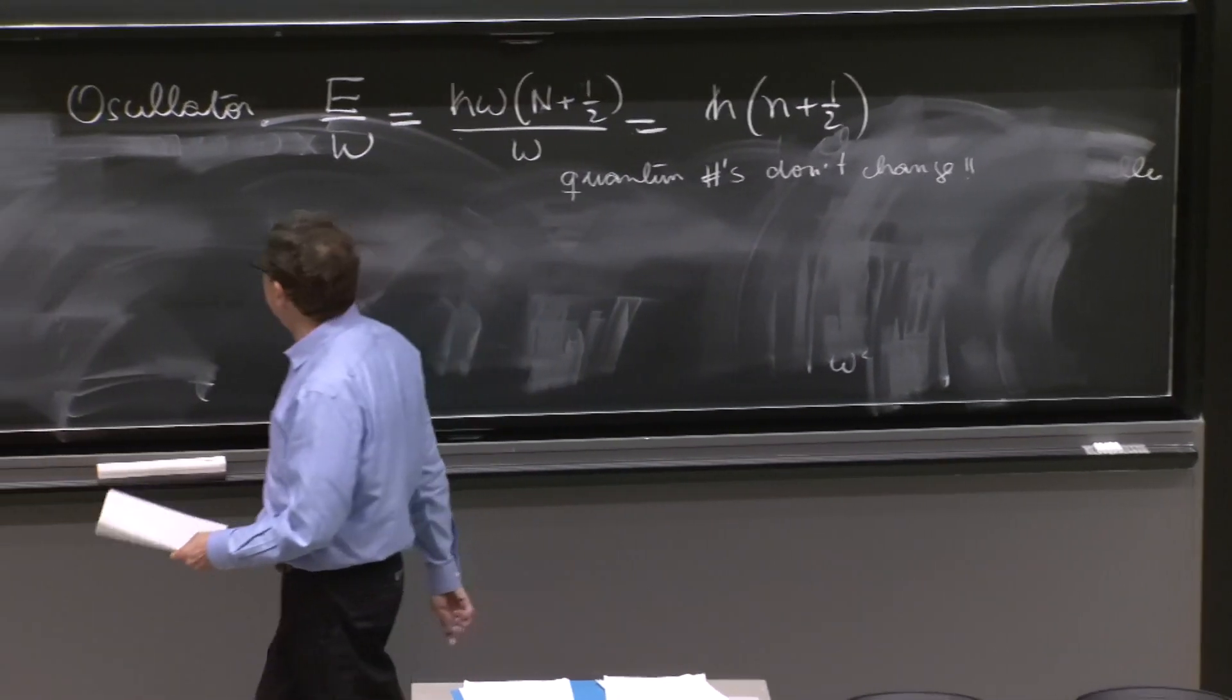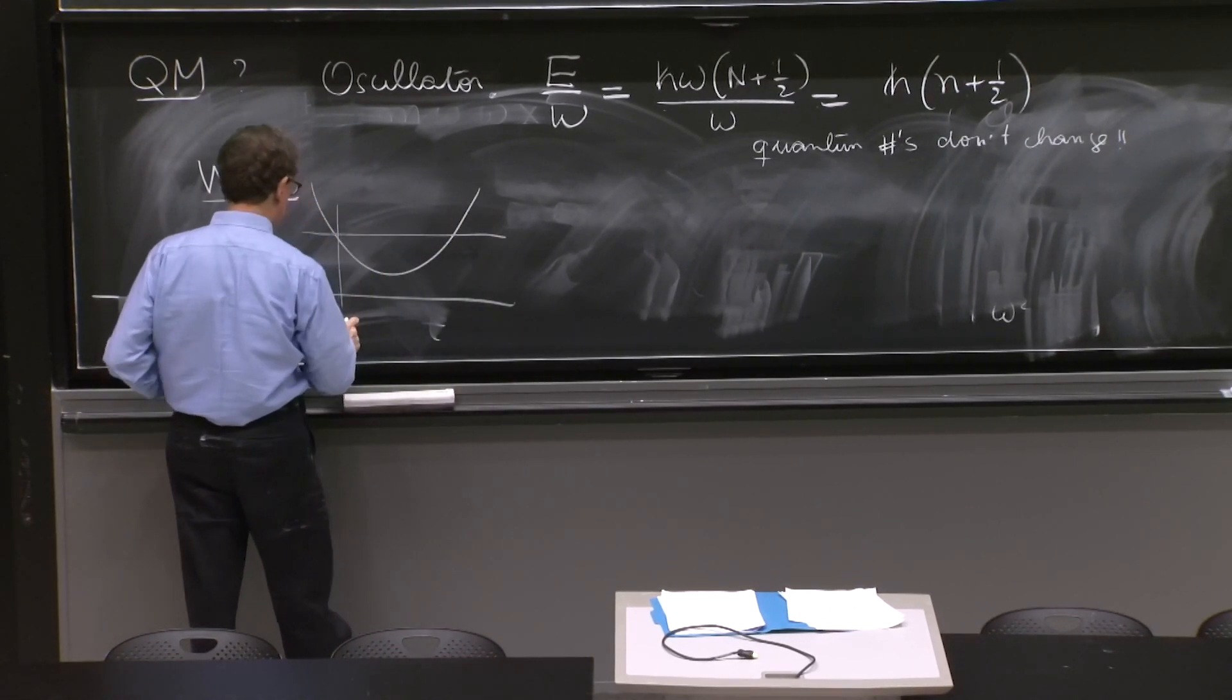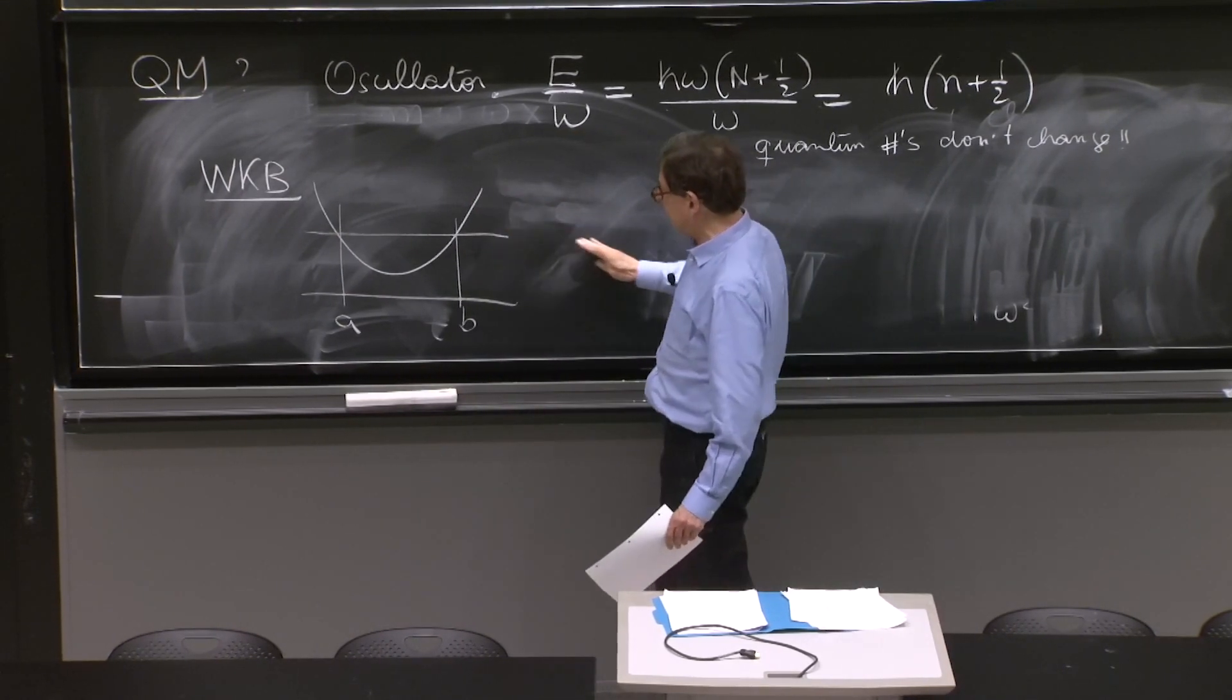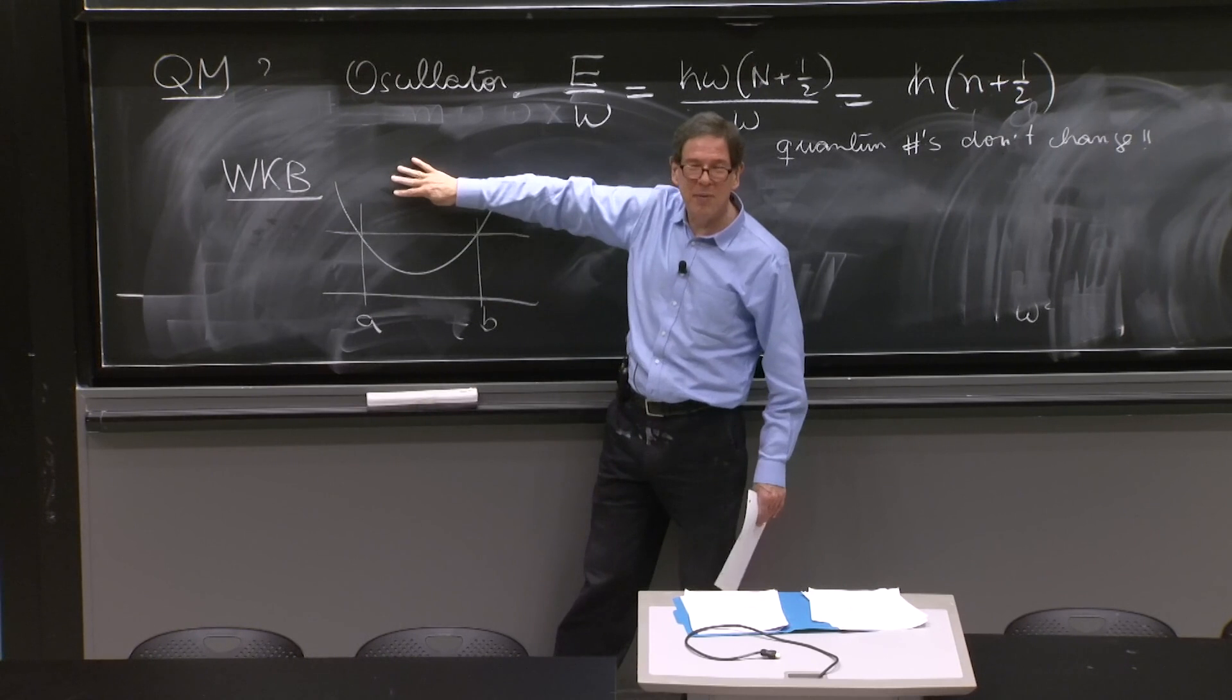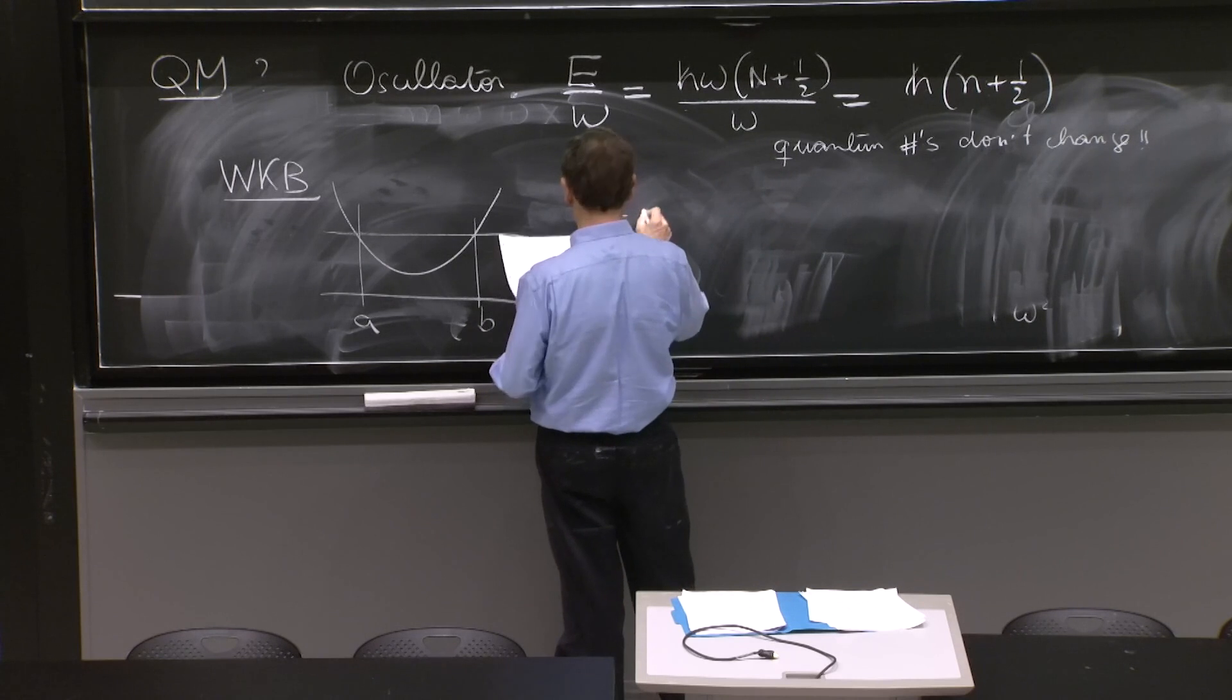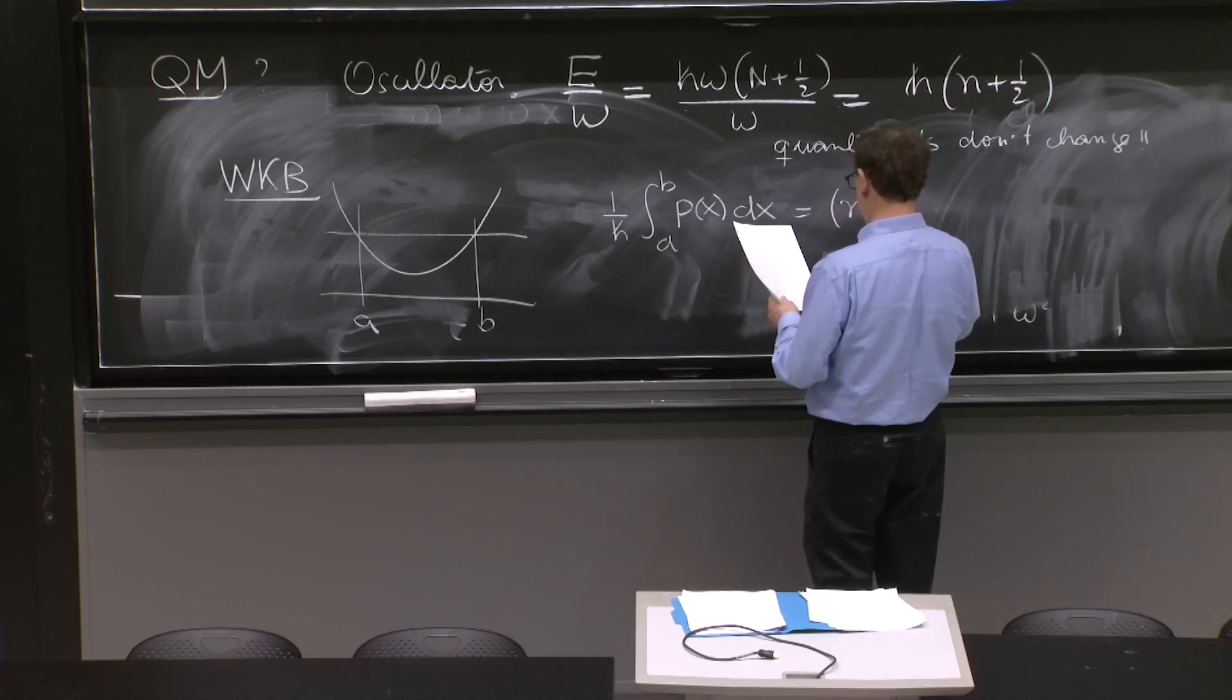Now, there's more here that is interesting. You remember your WKB approximation. You did the quantization when you had a system, say, with two turning points, A and B. Bohr-Sommerfeld quantization. Remember, you assume there's a decaying thing here. Therefore, a cosine in the middle with a pi over 4. A decaying theory, another cosine with a pi over 4. And the compatibility gave you the quantization condition. Now, what was that quantization condition? It was 1 over h bar integral of the local momentum, dx, A over B, equals n plus 1/2 pi.